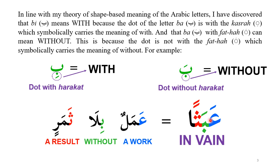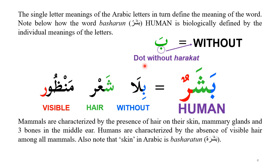This meaning applies not only to normal words but also scientifically to the definition of different words. For example, the word 'Basal' means 'human.' Once again, these letters have separate meanings: we can read it as 'Bila sha'r manzu,' meaning 'without visible hair.' So, humans by definition are animals without visible hair.